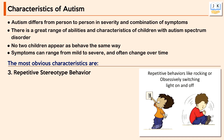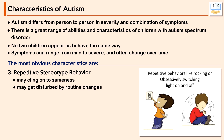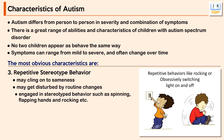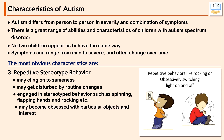Another obvious characteristic is repetitive stereotyped behavior. Children with autism may demonstrate repetitive and stereotyped behavior, clinging to sameness and becoming disturbed by routine changes. They engage in stereotyped behaviors such as spinning, flapping hands, and rocking. Some children may become obsessed with particular objects or interests, for example bottle caps, or insisting on going to school via a particular pathway.